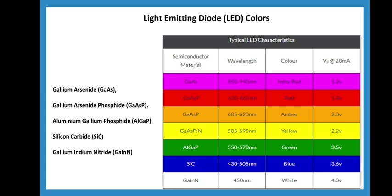The light emitting diode comes in different colors. The color produced depends on the semiconductor material combination. Infrared color uses gallium arsenide. Red uses gallium arsenide phosphide. Amber, which is more or less orange color, also uses gallium arsenide phosphide. Yellow also uses gallium arsenide phosphide. Green uses aluminum gallium phosphide. Blue uses silicon carbide. White uses gallium indium nitride. Using these semiconductor materials, you can produce different color lights.